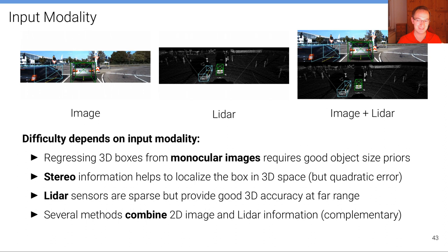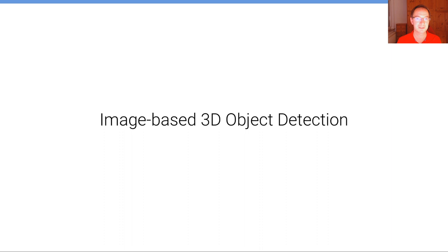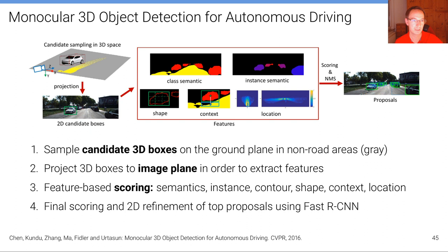That's the reason why several methods try to combine both modalities, as they provide complementary information. We'll look at examples for each of three categories, starting with image-based 3D object detection — the hardest category — which predicts metric 3D bounding boxes from just a single image.